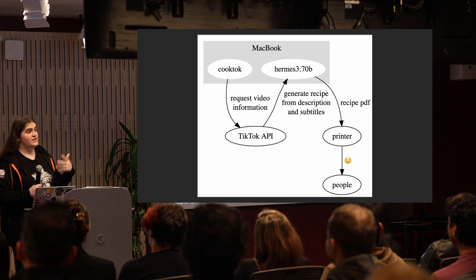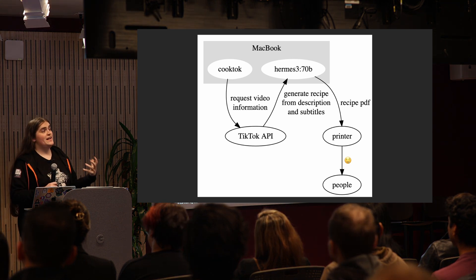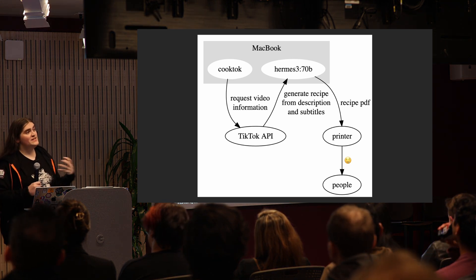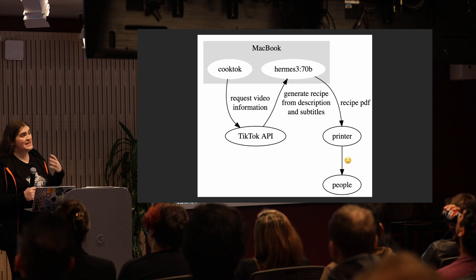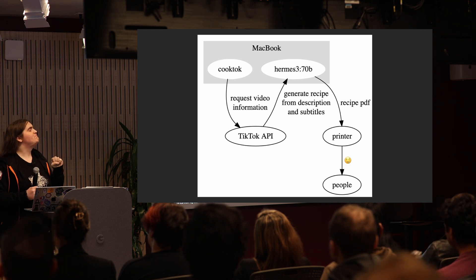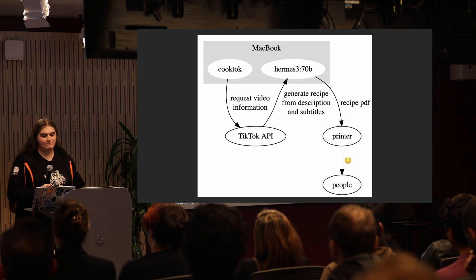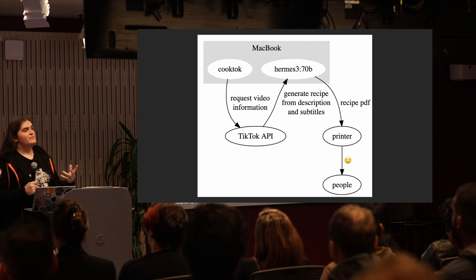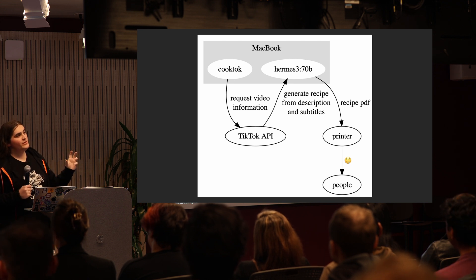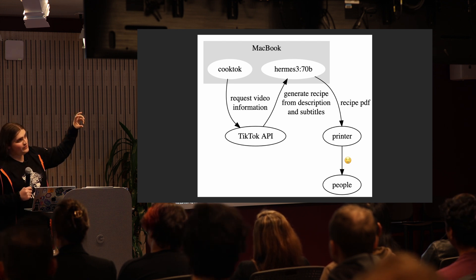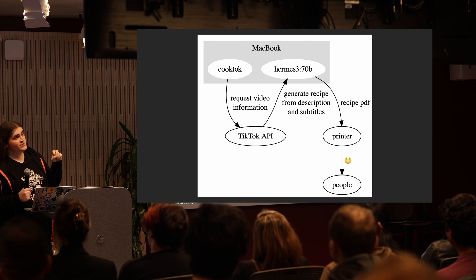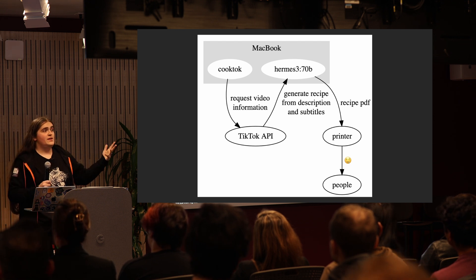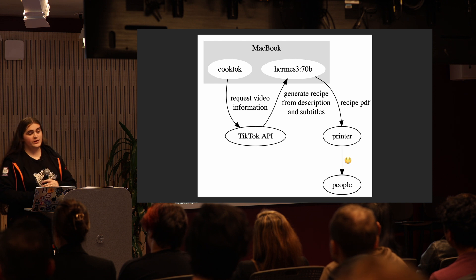So now that I had this working with a bunch of super hacky JavaScript, I decided to use Next.js to make it a little more robust. I made a basic web UI. When you click on it, it fetches the video information from the TikTok API, throws it into Hermes 3 with Ollama, and gets you stuff that you can print out and cook.